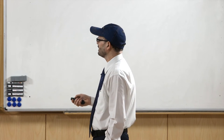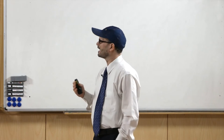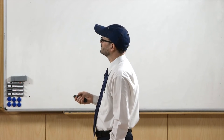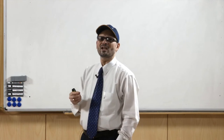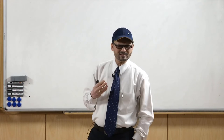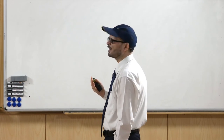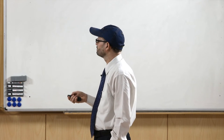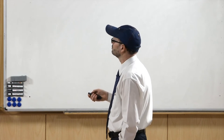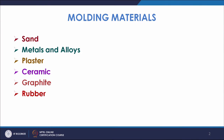Next material is plaster. Plaster is also used as pattern material, but plaster can also be used as mold material because it can set easily, it has good compressive strength and good strength overall. It sets quickly and you have the mold prepared in very less time. So plaster is also a material for mold. Next is ceramic — it is similar to plaster, however it has certain other qualities like good finish.